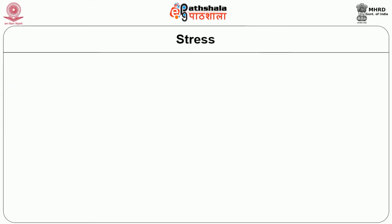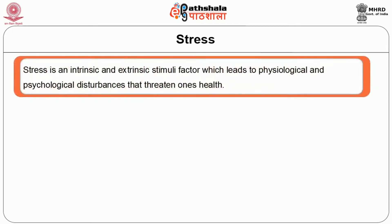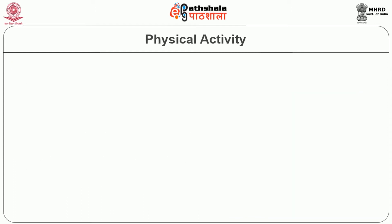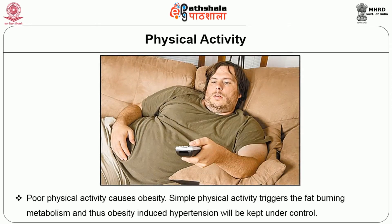Stress is the next factor. Stress is an intrinsic and extrinsic stimuli factor which leads to physiological and psychological disturbances that threaten one's health. Effects of modern lifestyle cause chronic mental stress, which leads to impaired renal sympathetic nerve activity and control of blood pressure is affected. Poor physical activity causes obesity; simple physical activity triggers the fat-burning metabolism and thus obesity-induced hypertension will be kept under control.